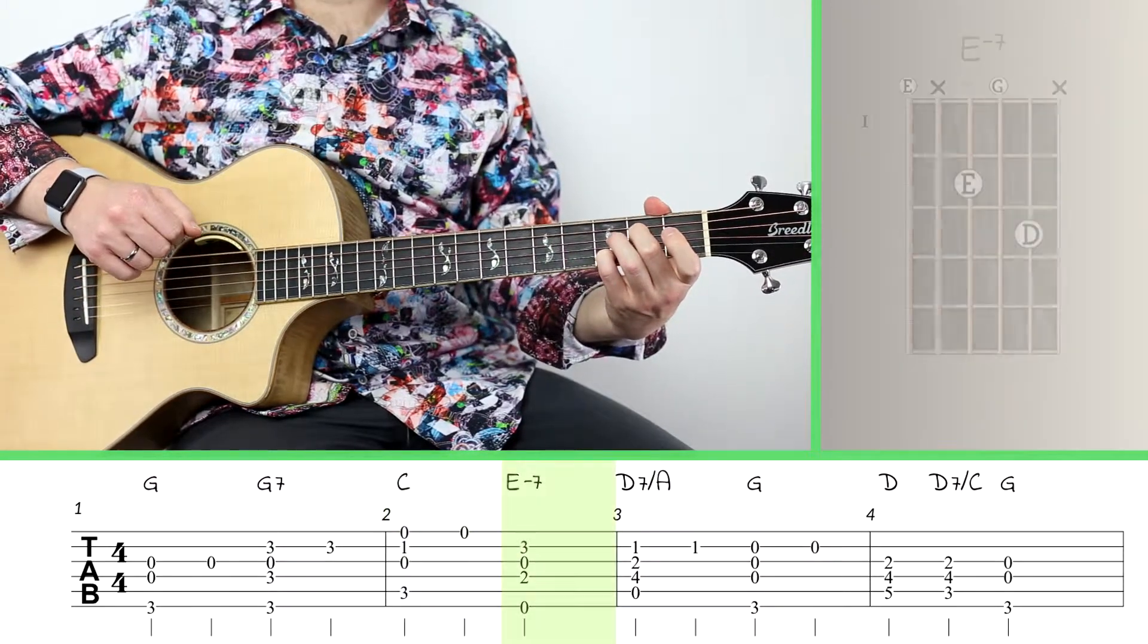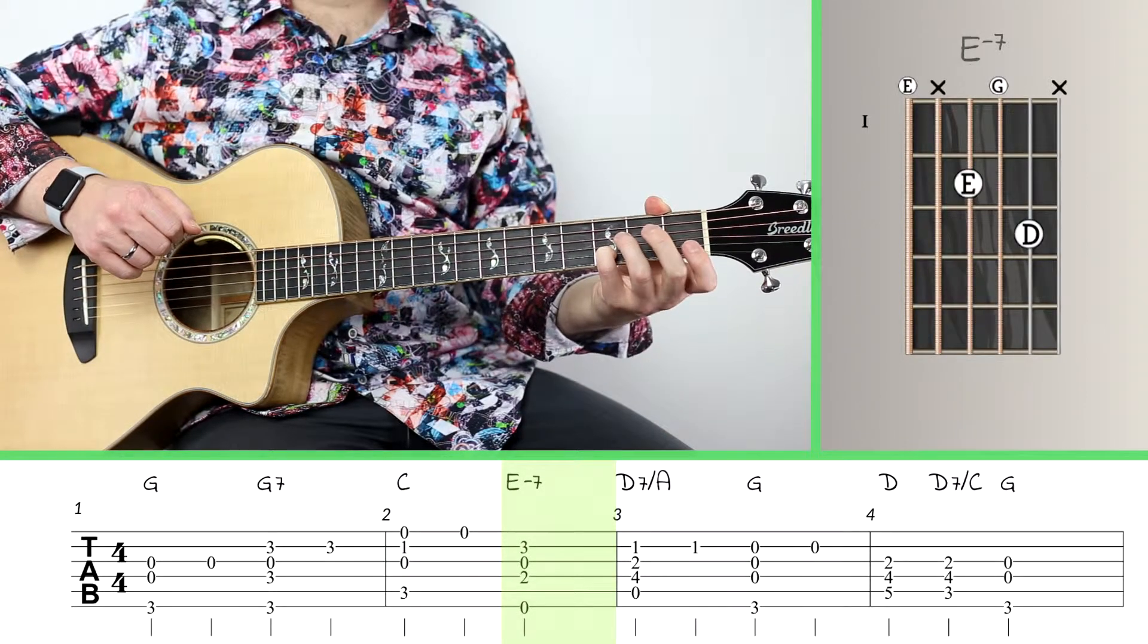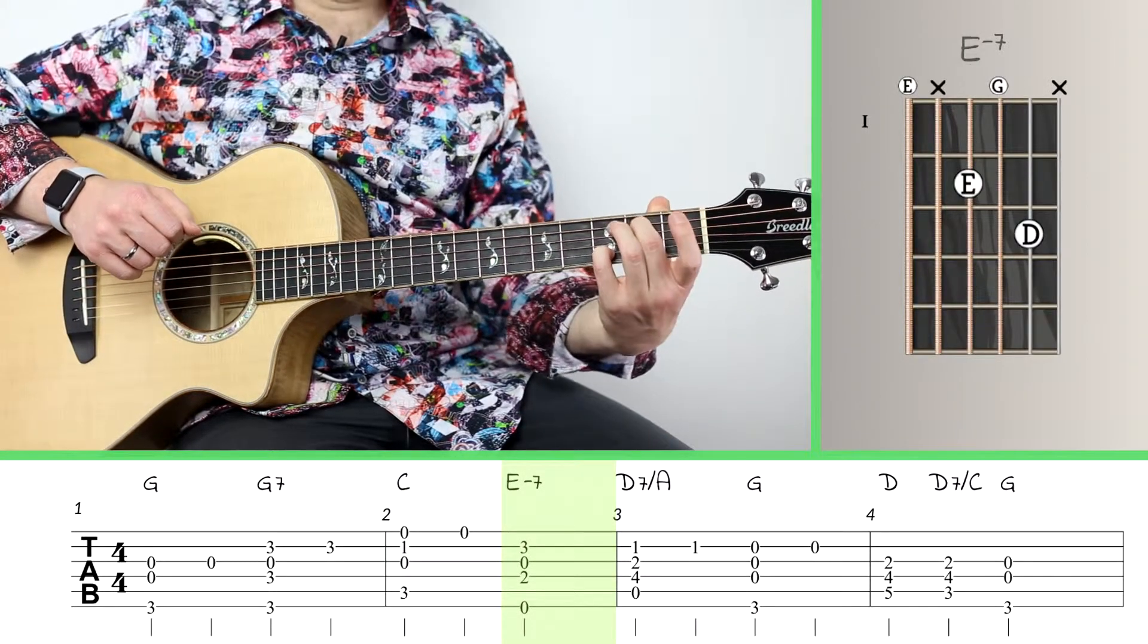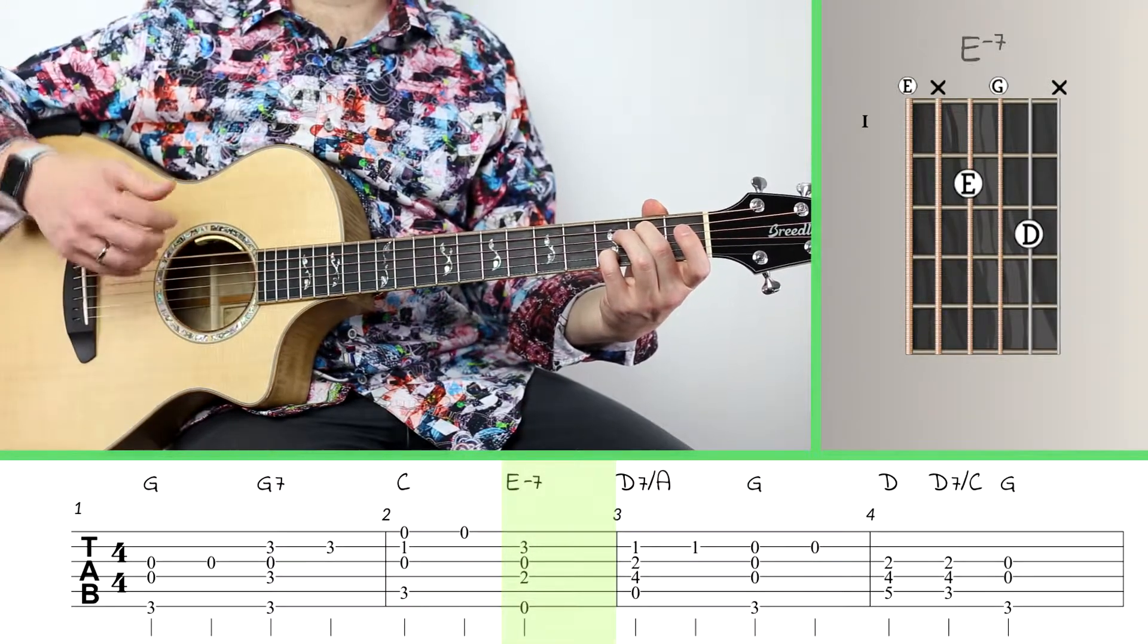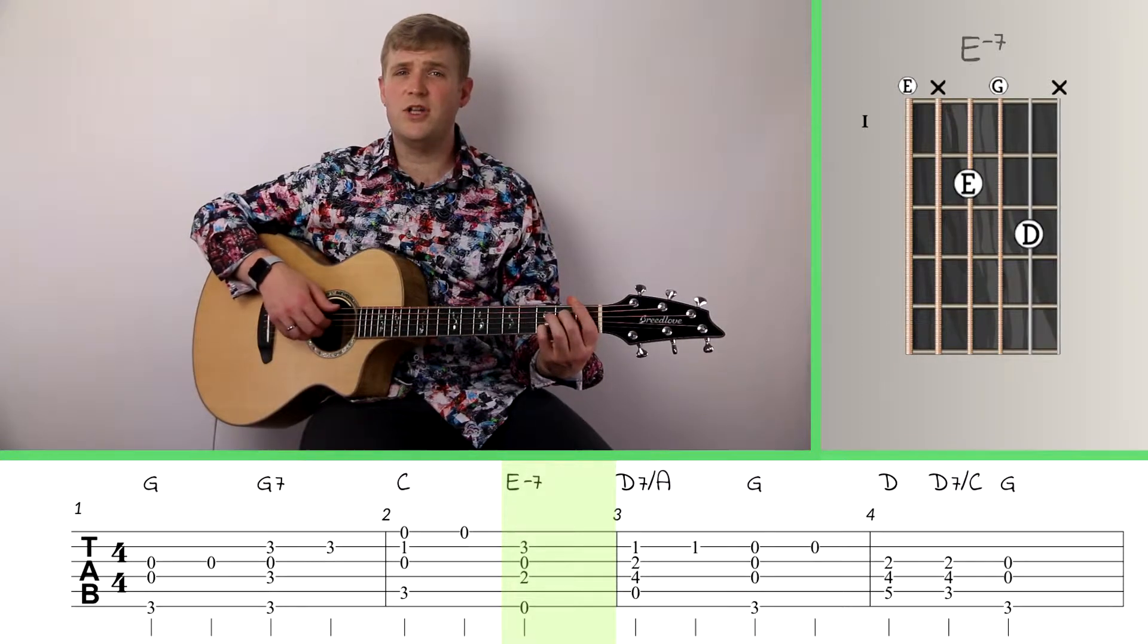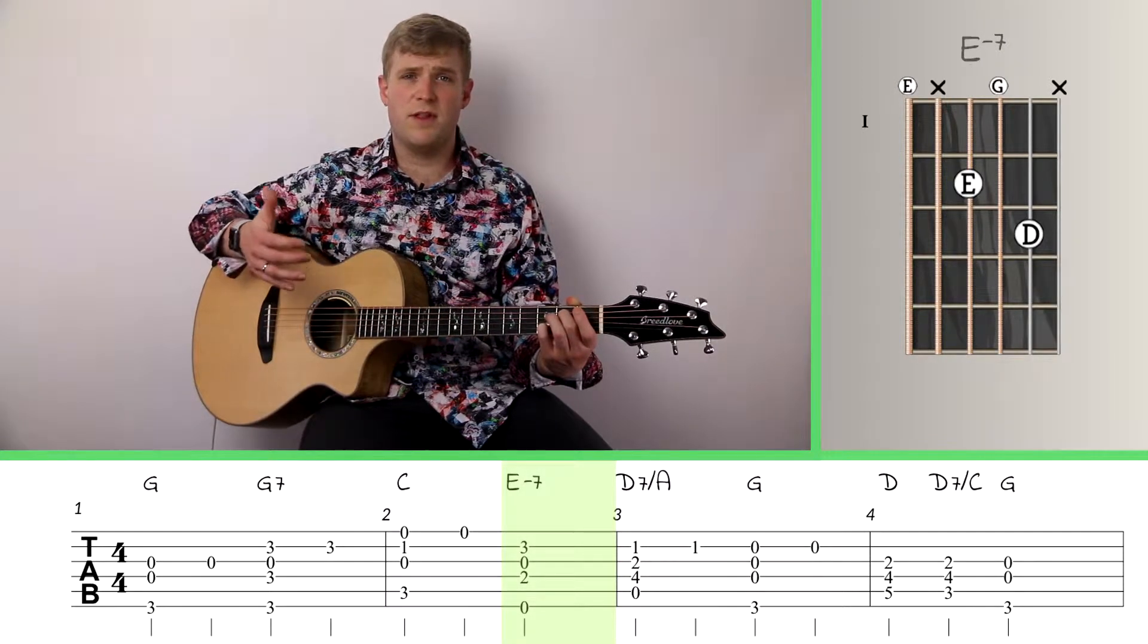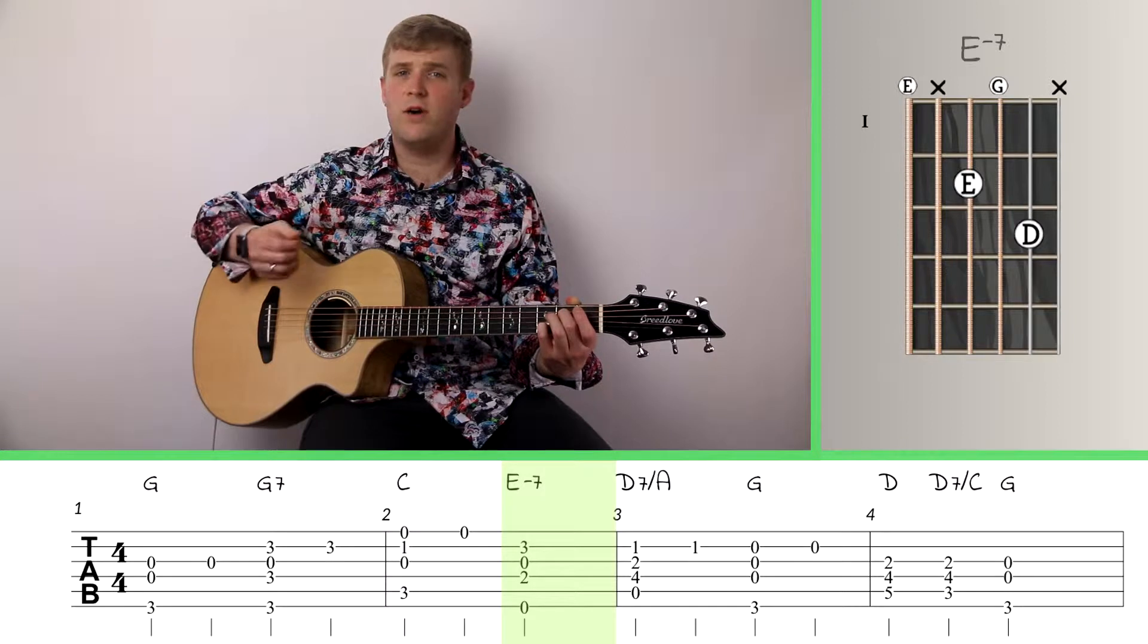And we resolve to an E minor seven. That's going to be our pinky on the third fret of the second string, and probably our second finger on the second fret of the fourth string. We pluck six, four, three, and two. So whenever we have a combination of four strings like that, we usually want to just pluck thumb, index, middle, and ring all together.